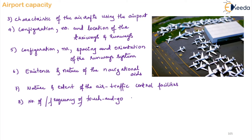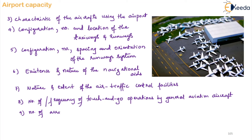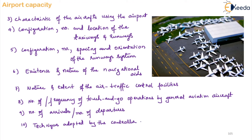The eighth factor involves touch-and-go operations — aircraft that come, land, finish the work fast, and immediately take off again. Based on how many touch-and-go operations there are, we decide the airport capacity. The ninth factor is the ratio of arrivals to departures at the airport. The tenth factor is the techniques adopted by the controller to operate the airway and runway system.